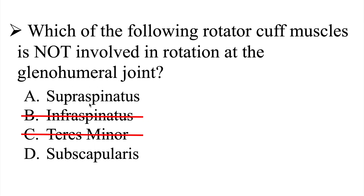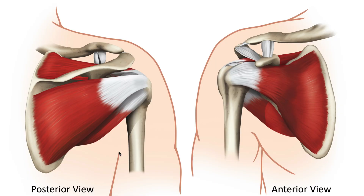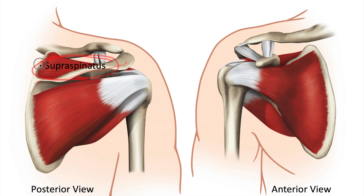That leaves us with either supraspinatus or subscapularis. Students sometimes confuse these two because they both start with S. The supraspinatus — supra meaning above — is above the spine of the scapula, whereas the infraspinatus is below it. The subscapularis — sub meaning below, think of a submarine — is underneath the scapula, located on the anterior aspect.